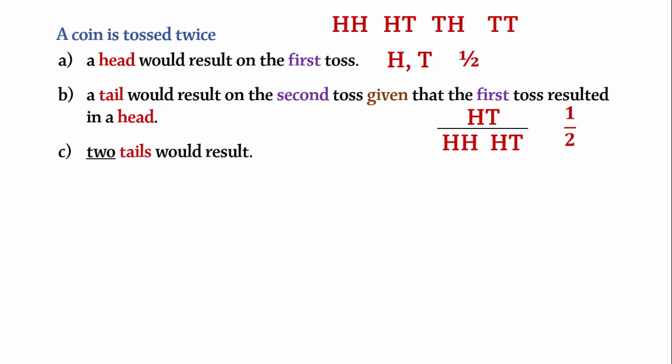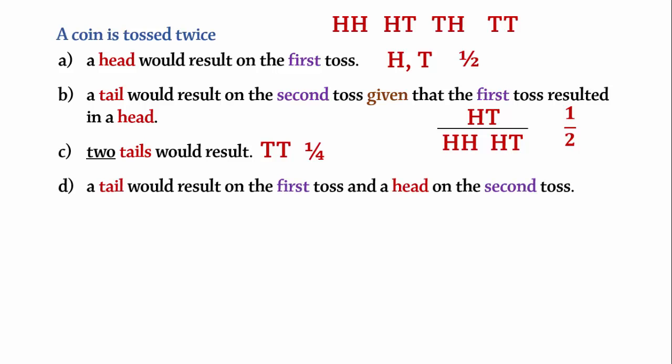Part C. What is the probability that two tails would result? Since two tails occurred only once in the four outcomes listed above, the probability of obtaining two tails is 1/4. Part D. What is the probability that a tail would result on the first toss and a head on the second toss? Tail-head occurs only once in the four outcomes. Thus, the probability is 1/4.